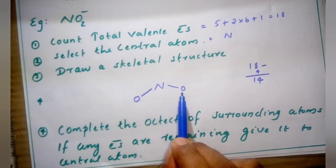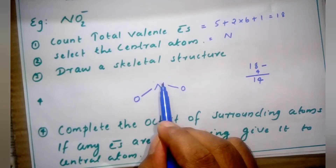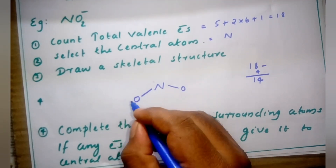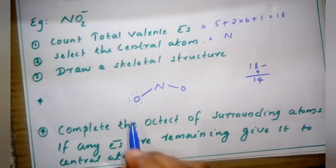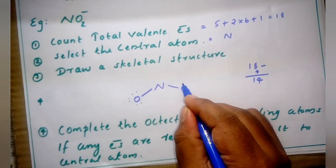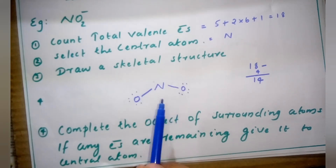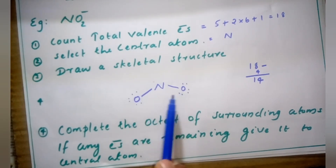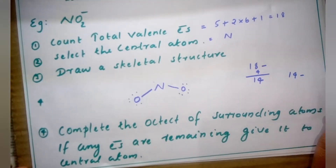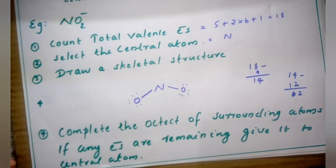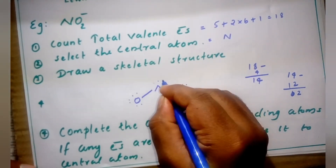Using the remaining 14 valence electrons, we complete the octet of surrounding atoms first. If any electrons remain, we balance the central atom also. Each oxygen currently has only two electrons, so we give six more to each oxygen: 6 plus 6 equals 12 electrons used. Then 14 minus 12 leaves two electrons remaining, and those two electrons we give to the central atom, nitrogen.